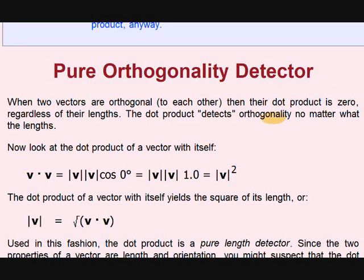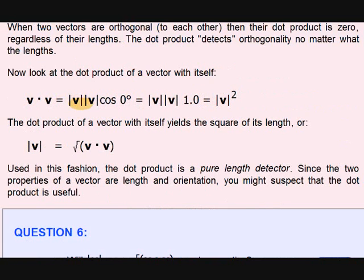Now look at the dot product of a vector with itself. Modulus V into modulus V cos 0. Then it is modulus V squared. Review of dot product properties.